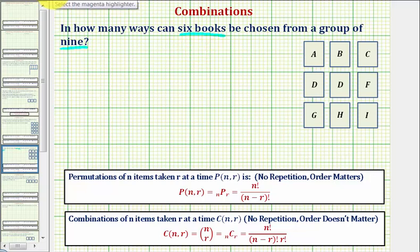If the order does matter, then we'll answer the question using a permutation. If the order does not matter, we'll answer the question using a combination.